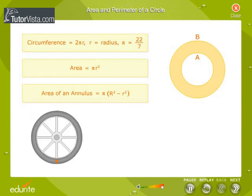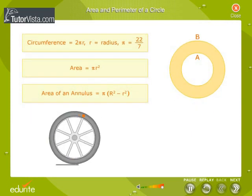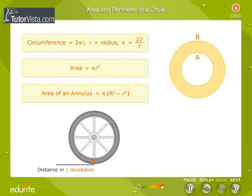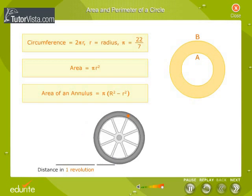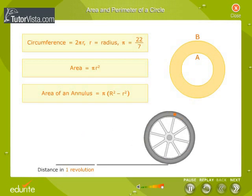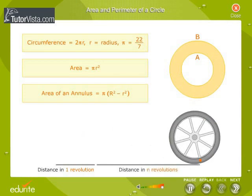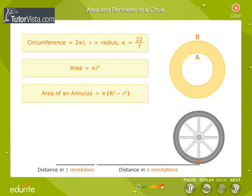Circumference of a wheel is equal to the distance travelled in one revolution. If the wheel makes n revolutions, n into circumference is equal to the distance travelled in n revolutions. Therefore, n is equal to distance divided by circumference. The number of revolutions made by a circular wheel is equal to the distance travelled divided by the circumference.